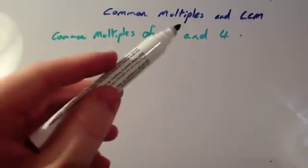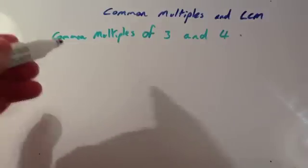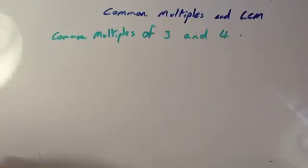We're going to look at the term common multiples now, and LCM. So let's find the common multiples of 3 and 4. If you're asked to find the common multiples of two numbers, start by writing down their multiples.